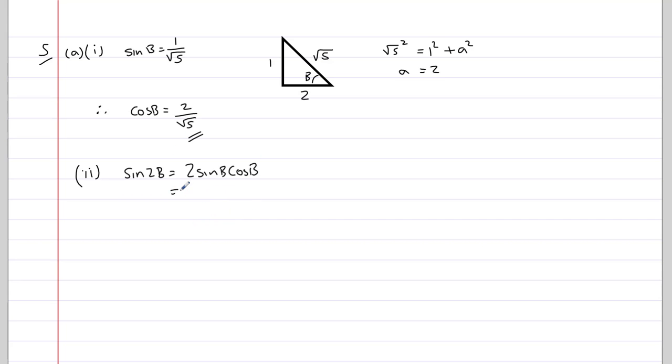So here, we just get 2 times sine B, which is 1 over root 5, and then we're going to multiply that by 2 over root 5. So on the top, we get 2 times 2, which is 4, on the bottom, root 5 times root 5, which is 5, so we get 4 fifths.